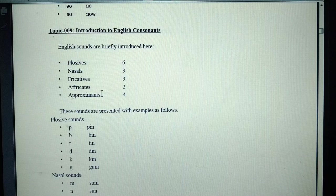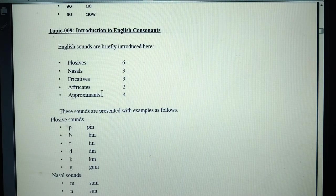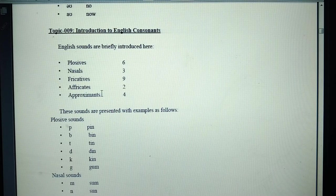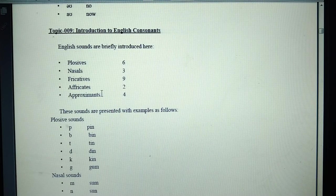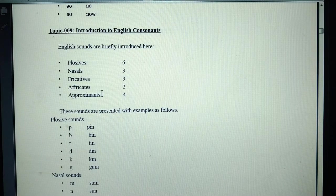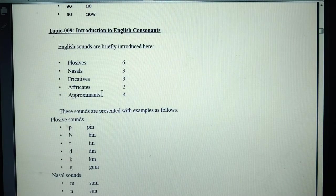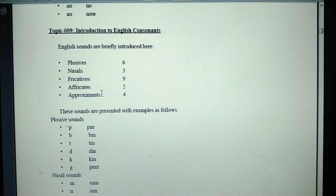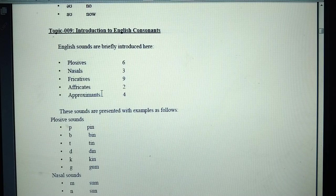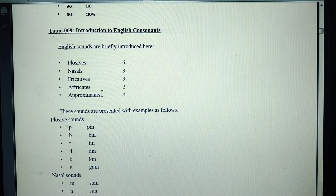English consonants are briefly introduced here: plosives, nasals, fricatives, approximants. These are all different consonants. These sounds are presented with examples. Plosive sounds are P, B, T, D, K, G.